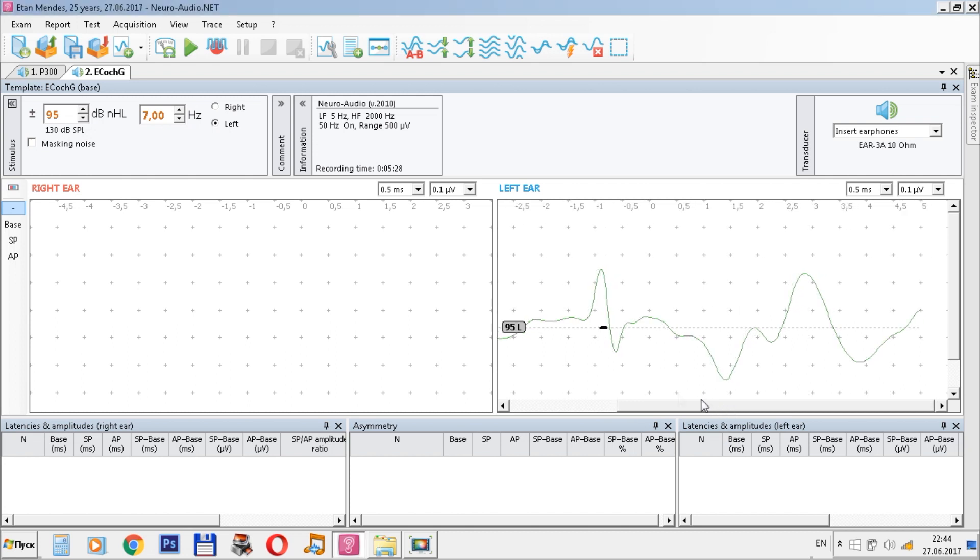We can put the markers: the baseline marker, SP for cochlear response, and AP for auditory nerve response. The program will automatically calculate all the necessary values, for example, the amplitude ratio and the area ratio, which is important in diagnosing diseases such as Meniere disease.